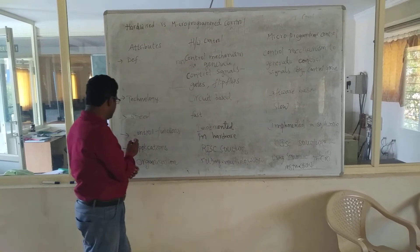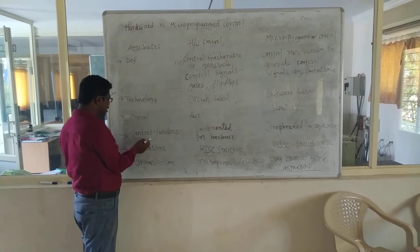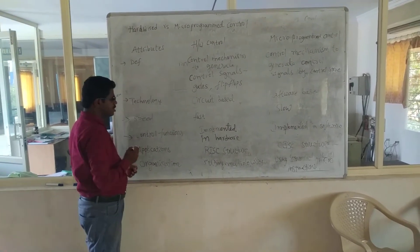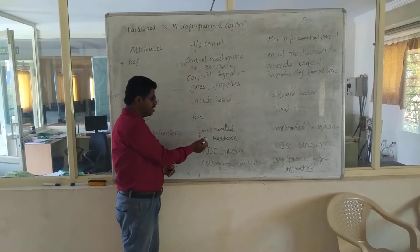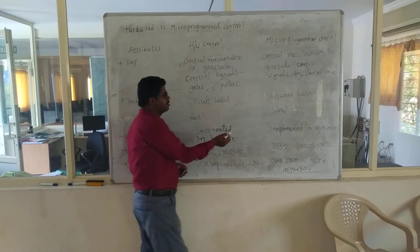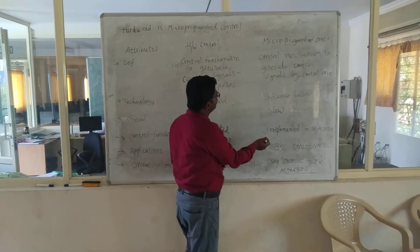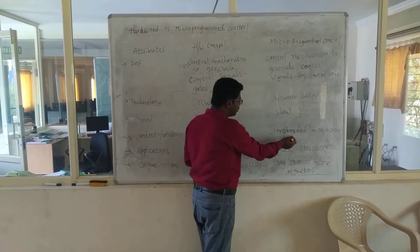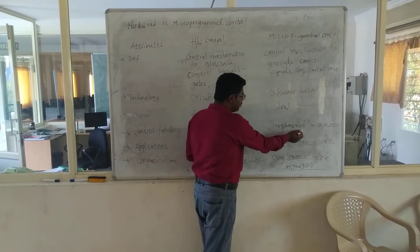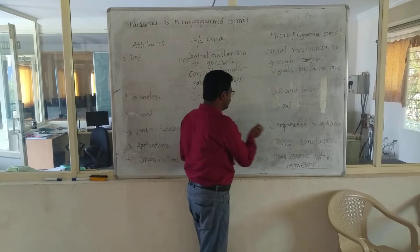The next parameter is control functions. In hardware control, these are implemented on the hardware side. But in microprogrammed control, these are implemented in the software area.